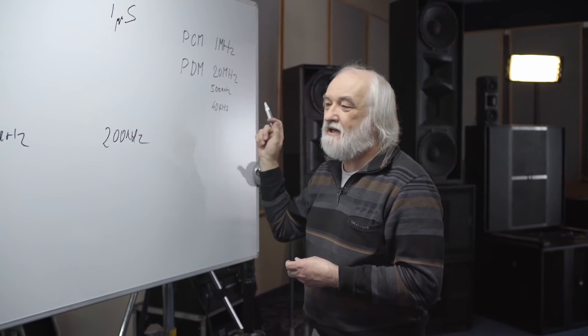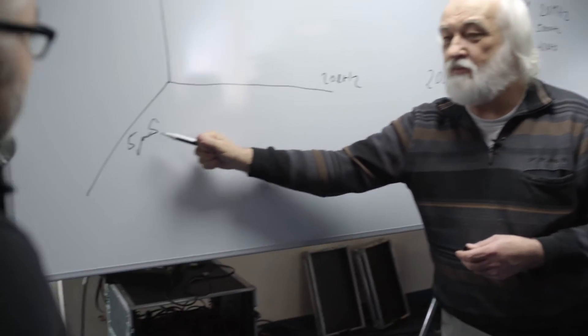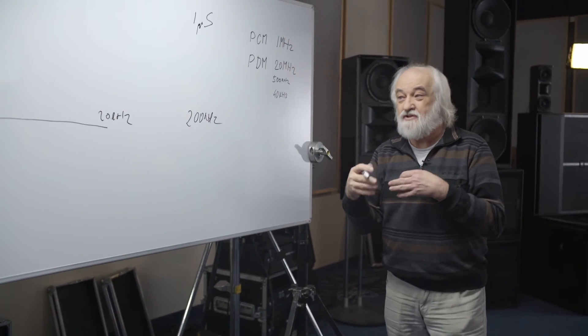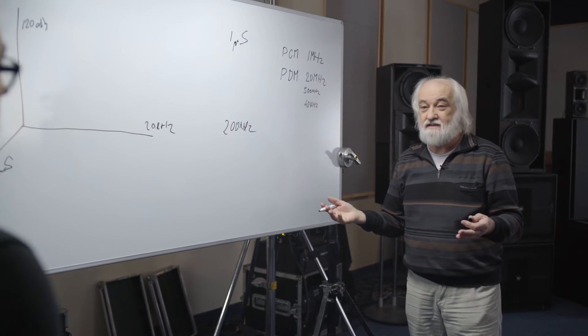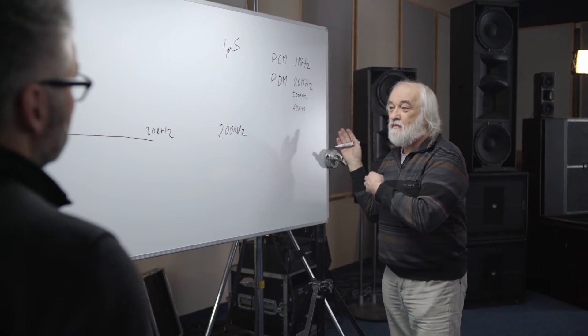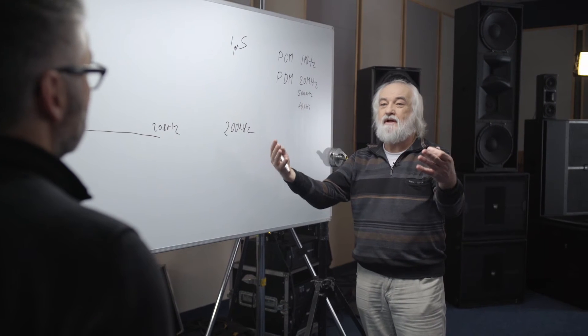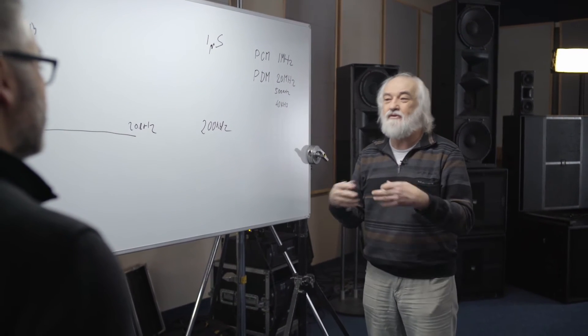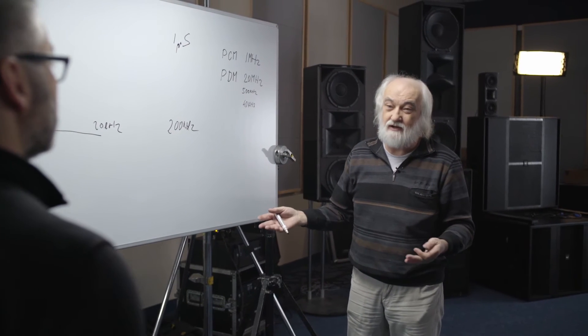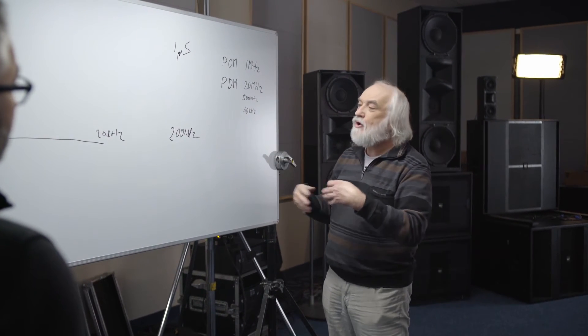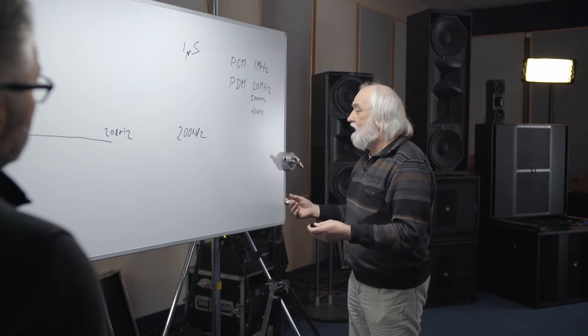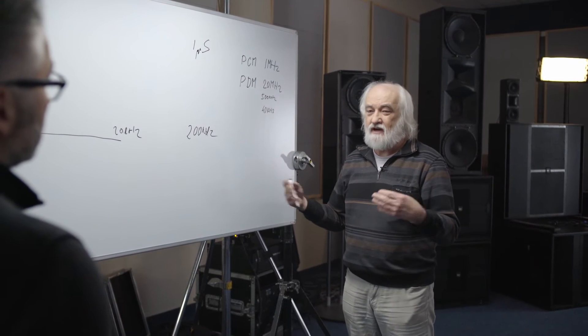You can see here the differences. That part cannot reproduce the information about the time, which is information about the space. And that's why most digital systems, they don't have depth to it. No ambience. Exactly. No dynamics. And there is a huge loss of information. Which becomes very audible.